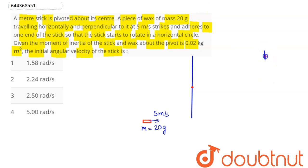The wax gets stuck to the stick. Now, this whole system rotates about the center with omega, the initial angular velocity which we have to find out.